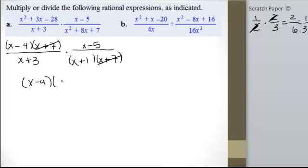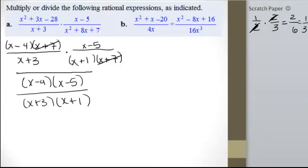In the numerator, we have x minus 4, x minus 5. And in the denominator, we have x plus 3, x plus 1. None of those are common factors, or none of those are reducible. So that's as far as we can go on that one.